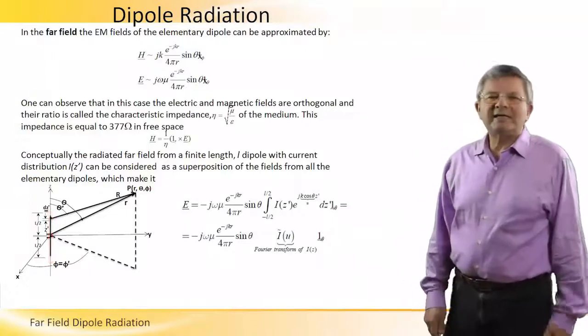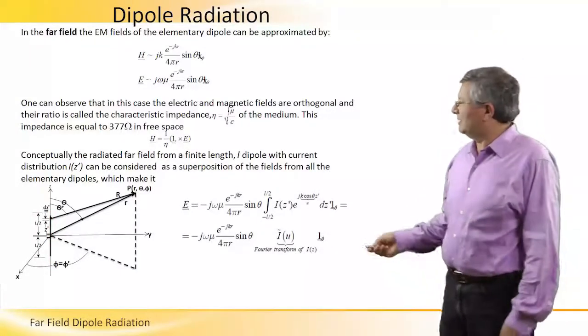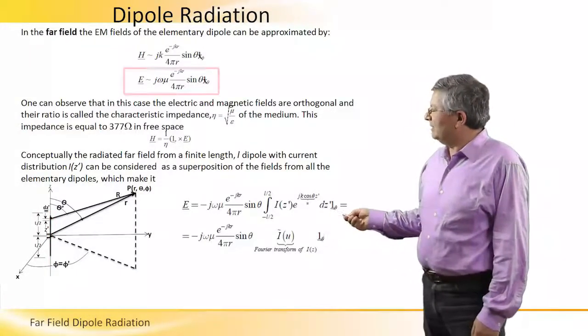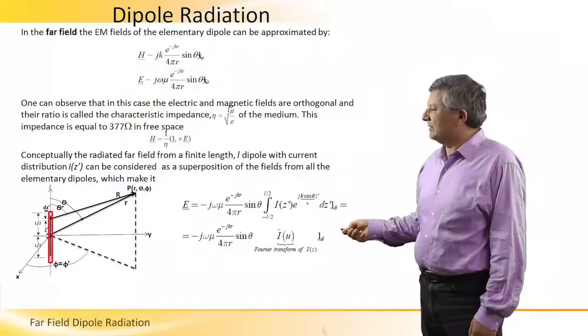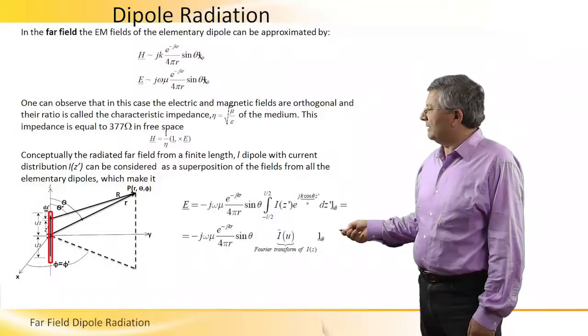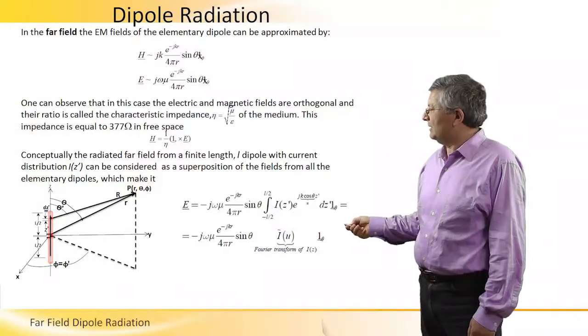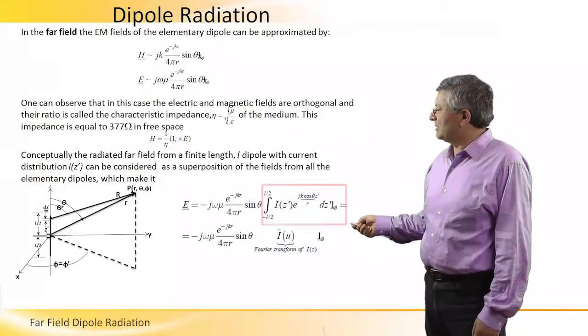We can get the total electric field by integrating the electric field over all the elementary dipoles which make up the entire finite length dipole, and this can be expressed by this integral.